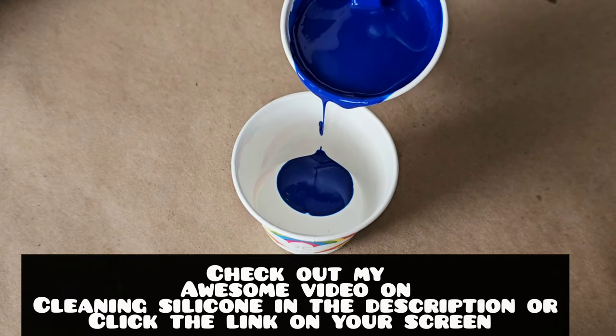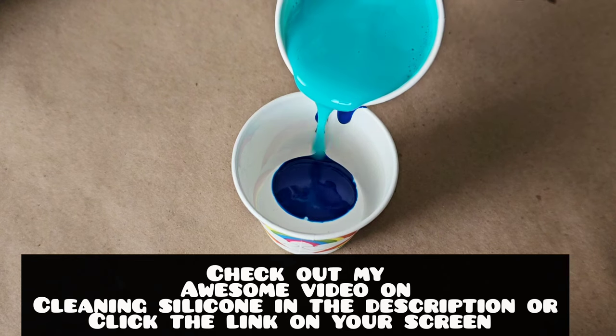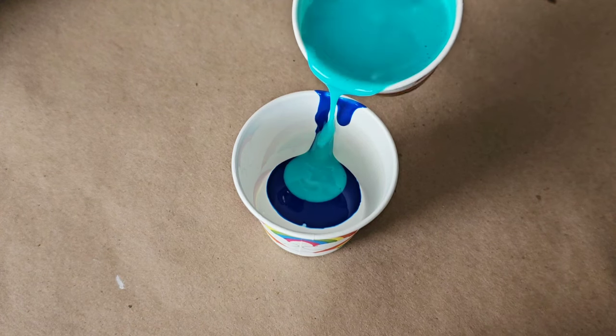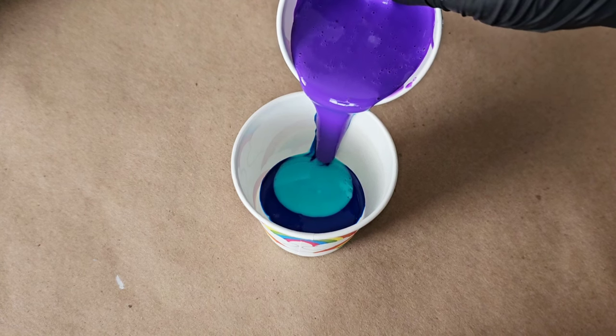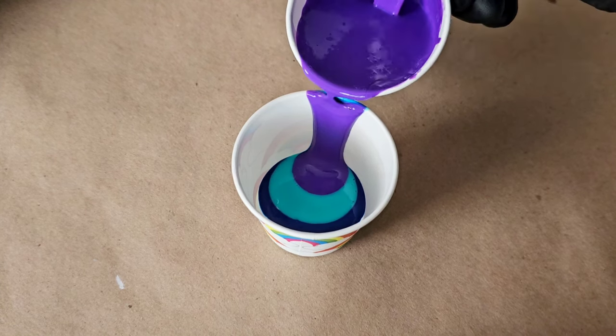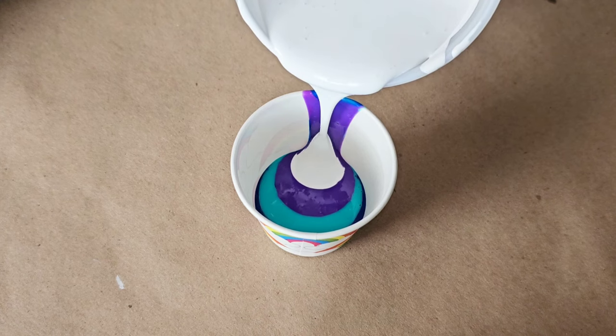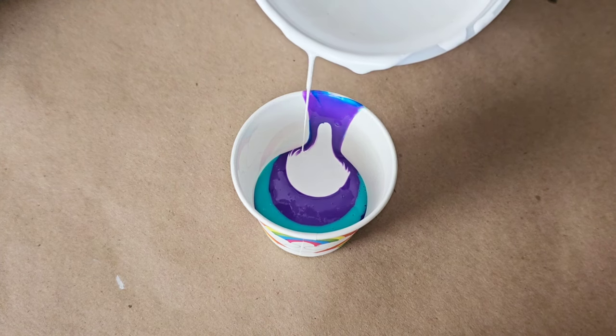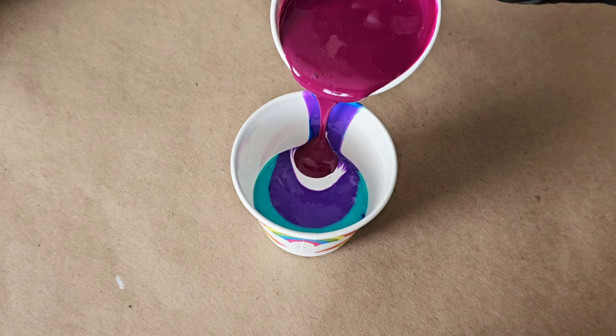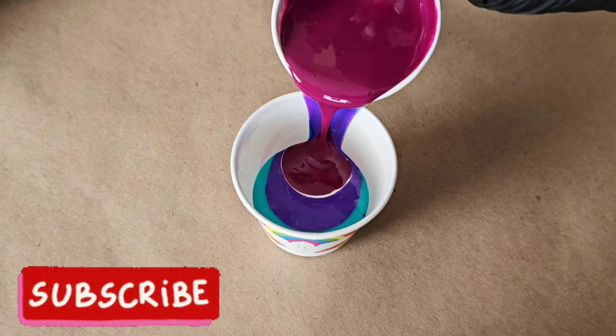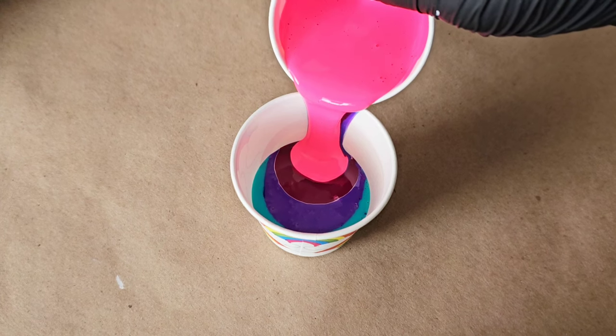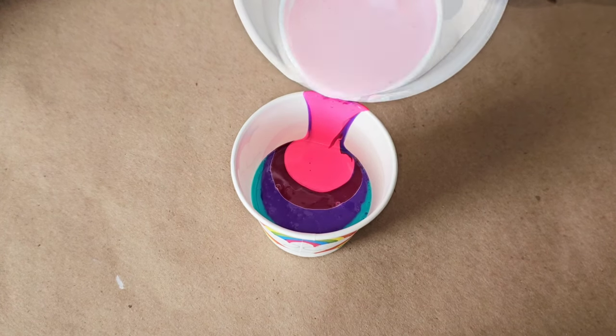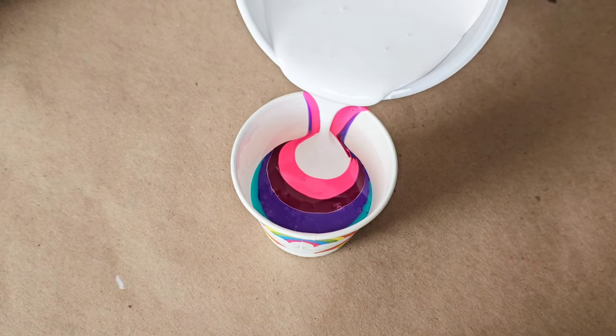But first, I'm creating four flip cups. So I just layer the paint in the cup, one on top of the other. I started off with white, added some blue, added some teal, added some purple, added a little white to separate the purple from the magenta and then ended with some hot pink. I repeated this order two times in the cup until it was almost full.